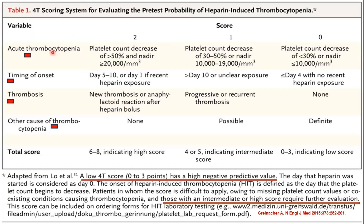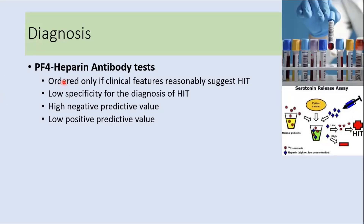The 4T scoring system stands for Thrombocytopenia, Timing of onset, Thrombosis, and other causes of Thrombocytopenia. A score of 0 to 3 indicates a low probability and has a very high negative predictive value, whereas intermediate or high scores require further evaluation with additional tests. The platelet factor 4-heparin antibody test can detect antibodies in the serum, but has low specificity and high negative predictive value for HIT.